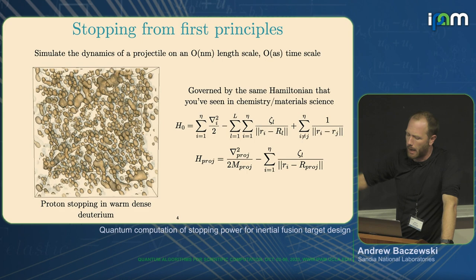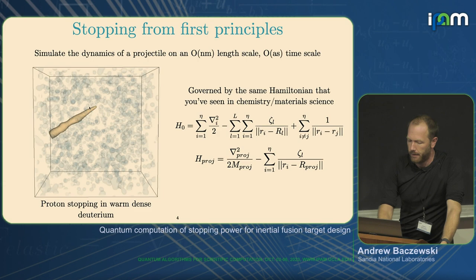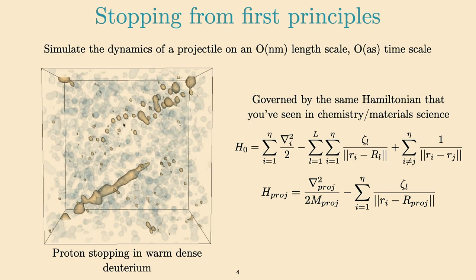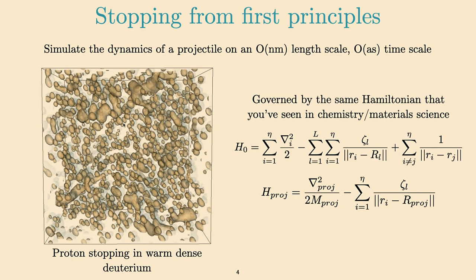Here's a little movie: you essentially have a proton passing through deuterium plasma. It Pac-mans around the box, exciting things — these are the charged excitations of the system. Essentially what you're observing are the excitations of the charged particle in the medium as it traverses through, and that's what causes the electronic stopping. That's what we simulate.